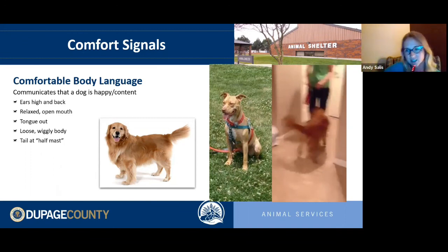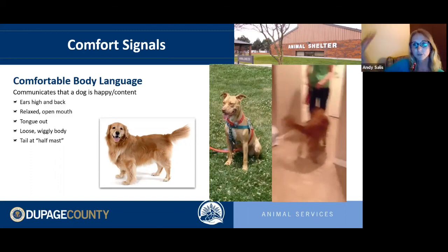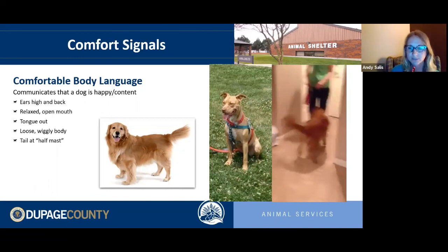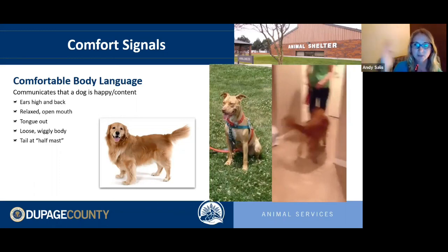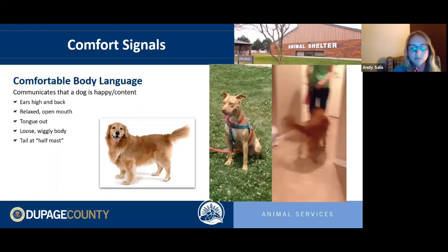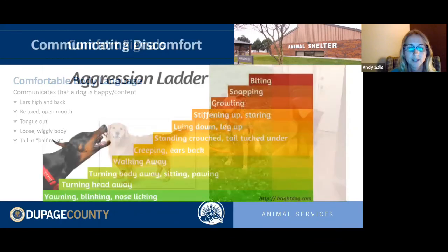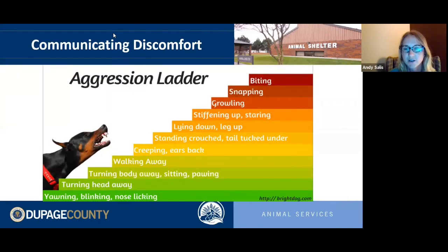Look at the type of wag too. A happy wag is loose, going back and forth in almost big circles. Dogs that are over-aroused or showing early warning signs will have tails raised above half-mast and a very rapid, stiff, pointed wag rather than that loose circular motion. A loose, open, wagging tail at half-mast means a happy dog.